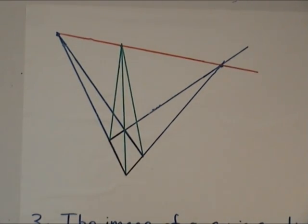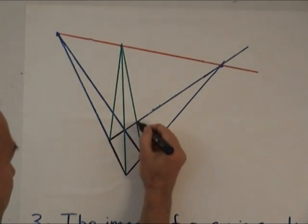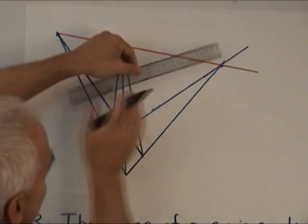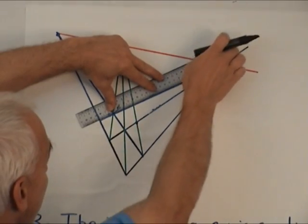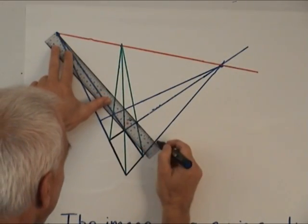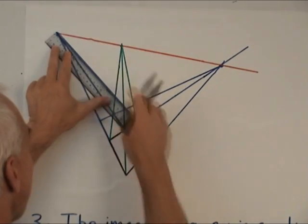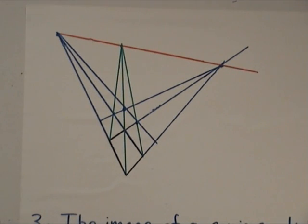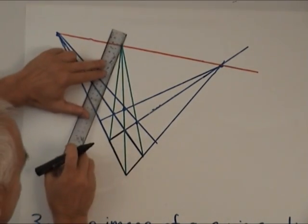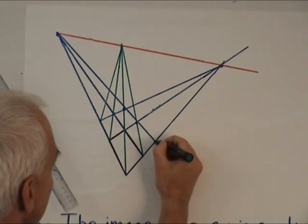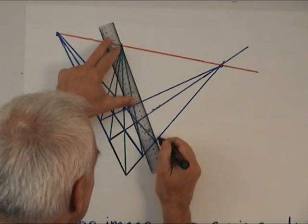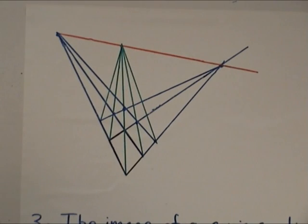And once we've done that, we can draw some more lines because we have some new points here. If I've drawn it right, those things would intersect there. Now we have some more places where we can create diagonal points. Here for example. And here.